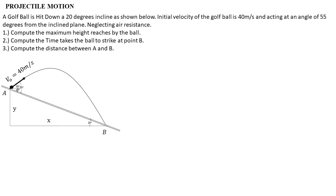A golf ball is hit down at 20 degrees inclined as shown below. The initial velocity of the golf ball is 40 meters per second, acting at an angle of 55 degrees from the inclined plane. Neglecting air resistance, compute the maximum height reached by the ball. The maximum height is when the ball reaches the point where the vertical component of velocity is equal to zero — the transition from moving up to moving down.